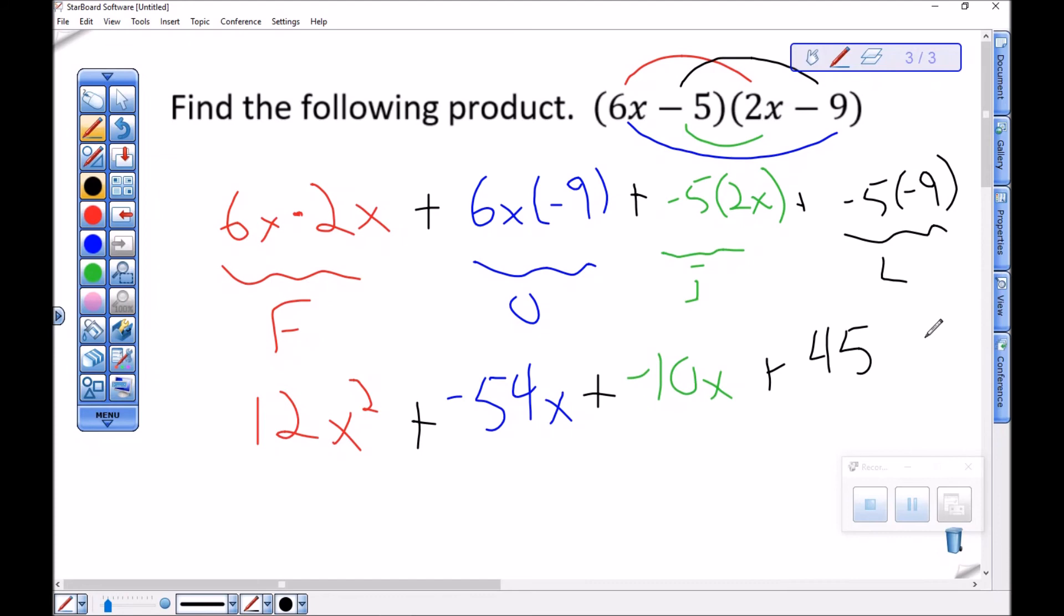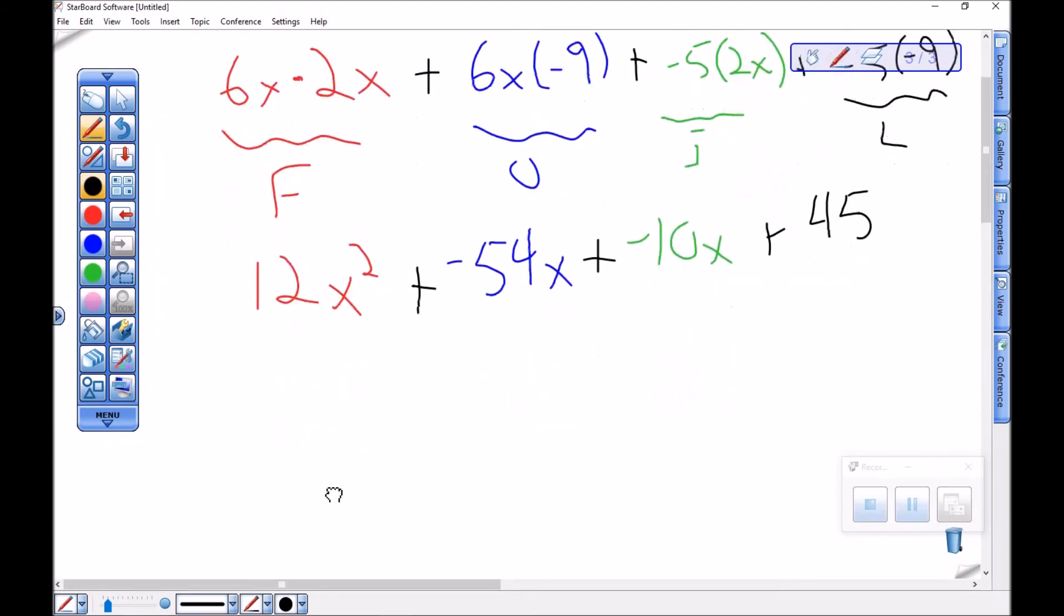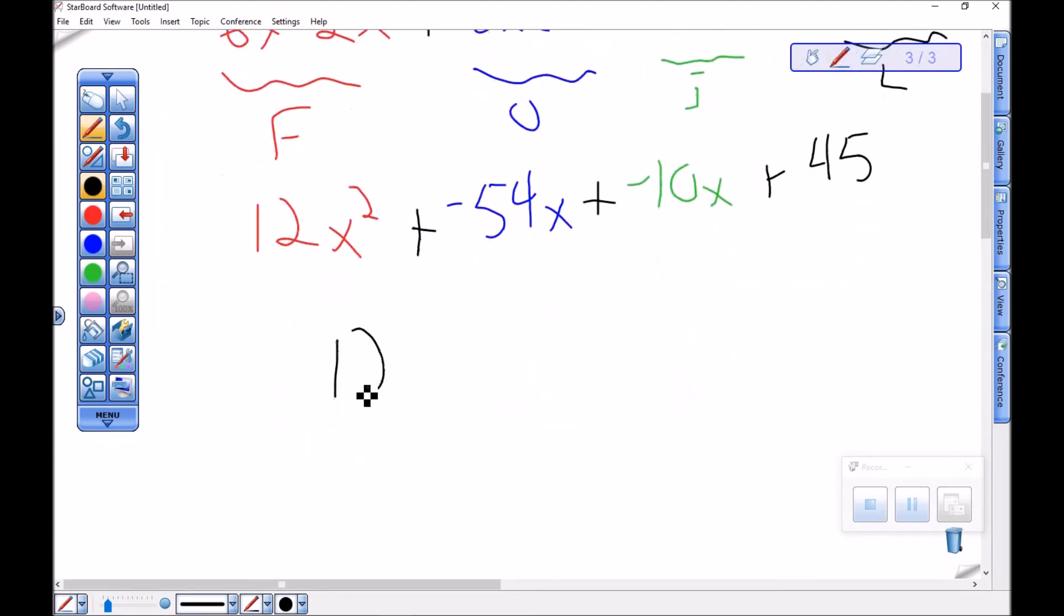So first, outside, inside, last. I've got a couple like terms. I have 12x squared, and then these guys are both the same. So negative 54x plus a negative 10x should be minus 64x, and then plus 45 at the end.